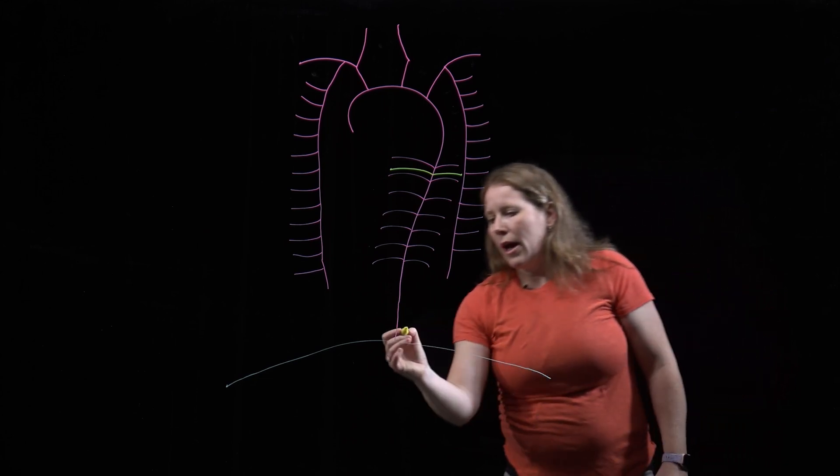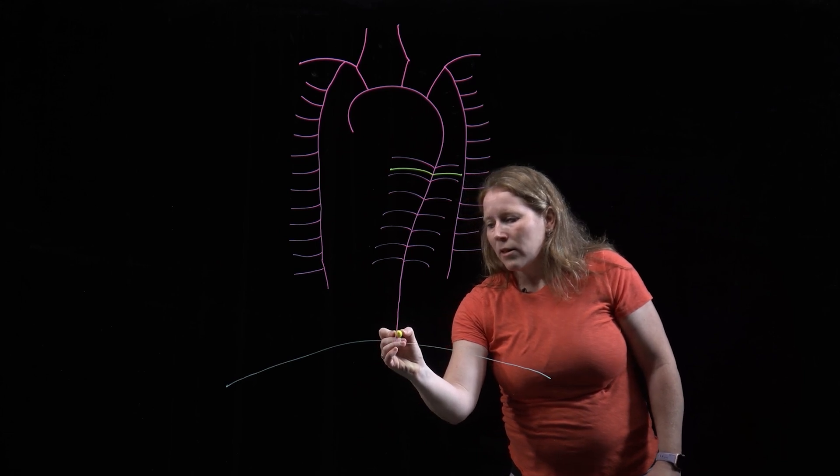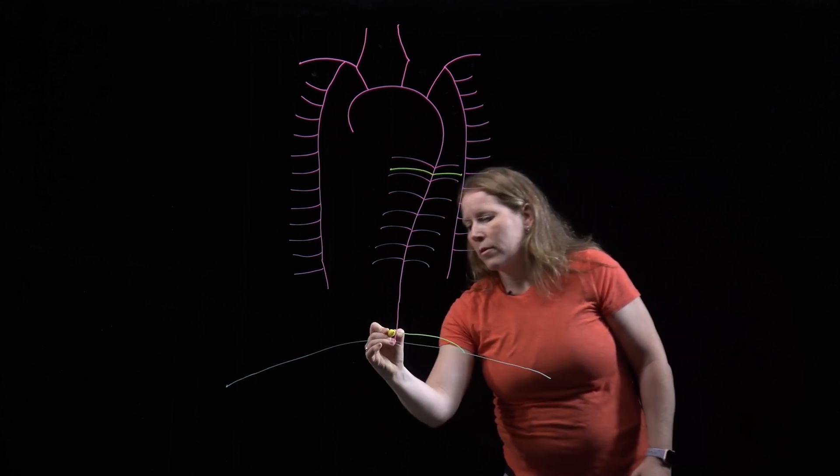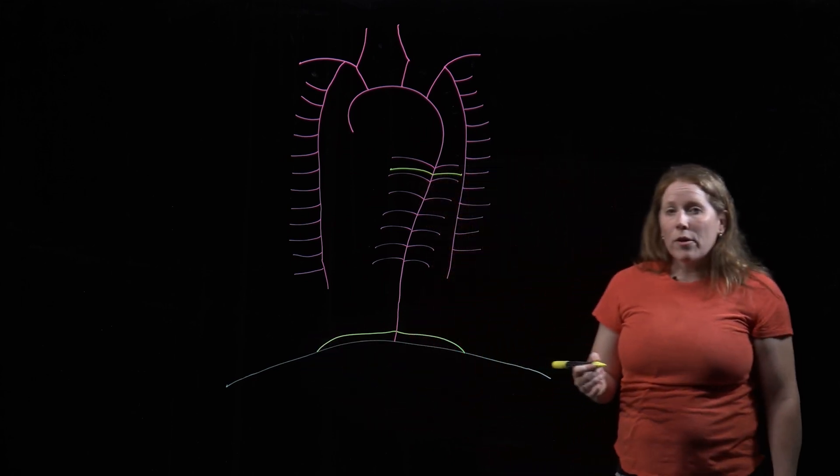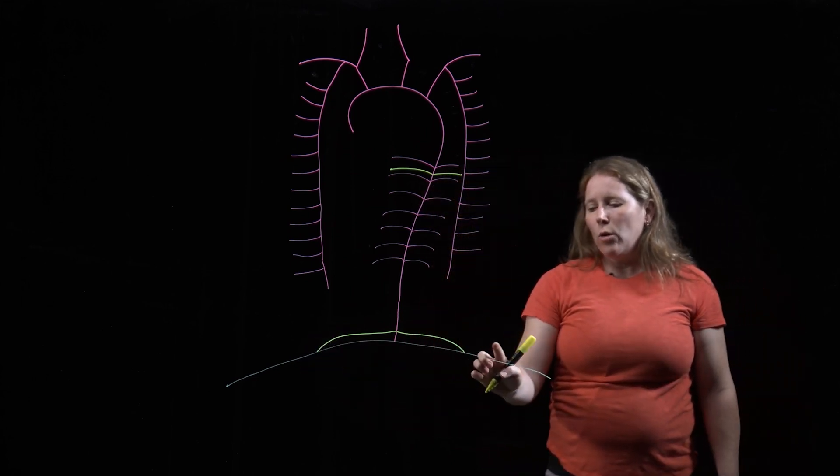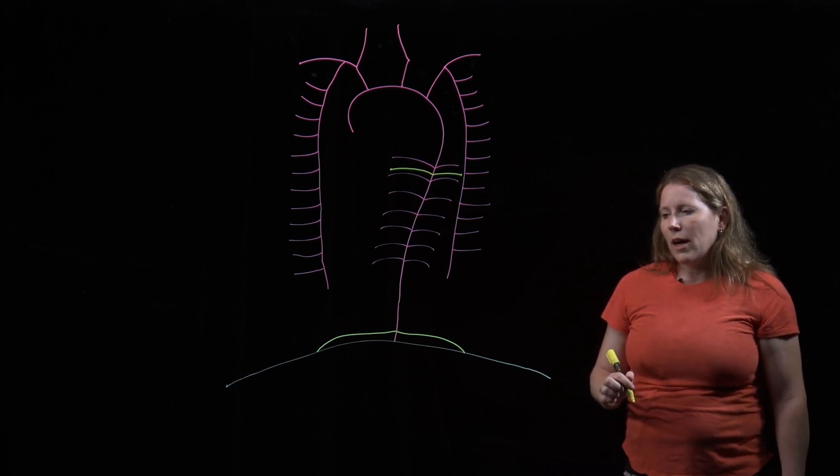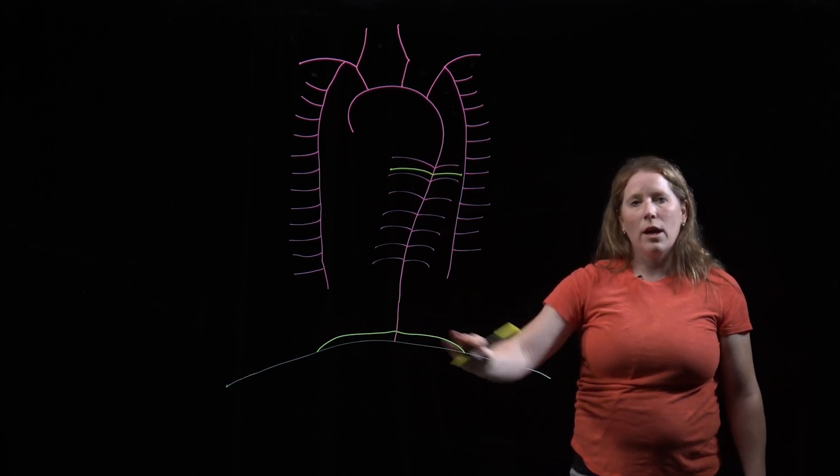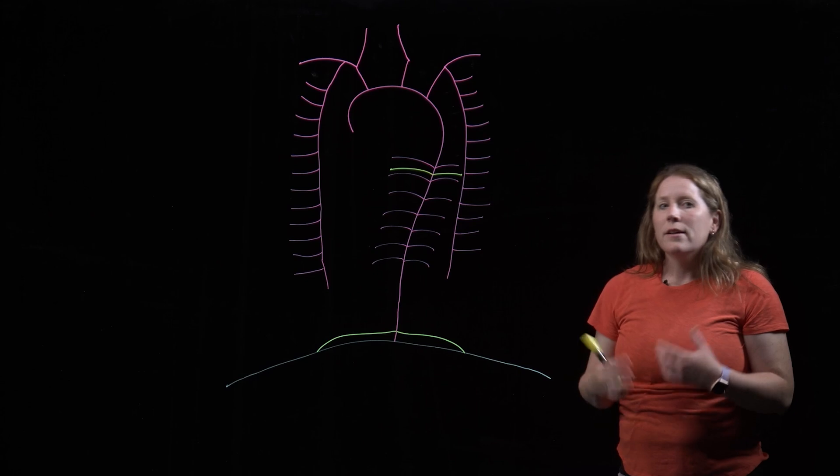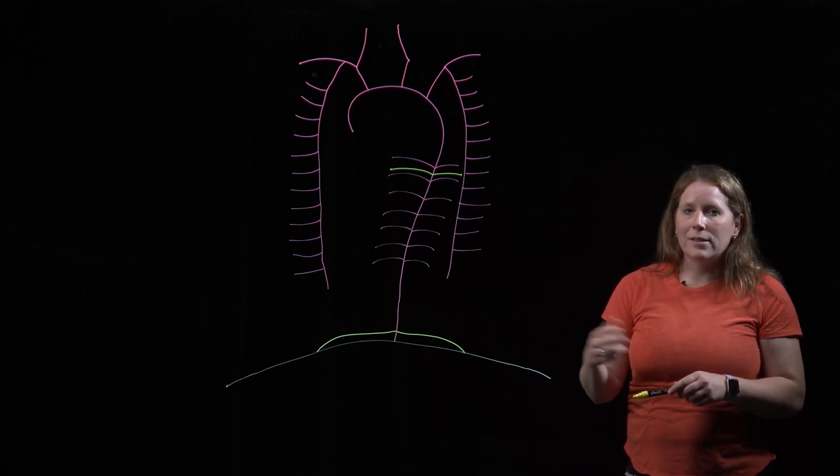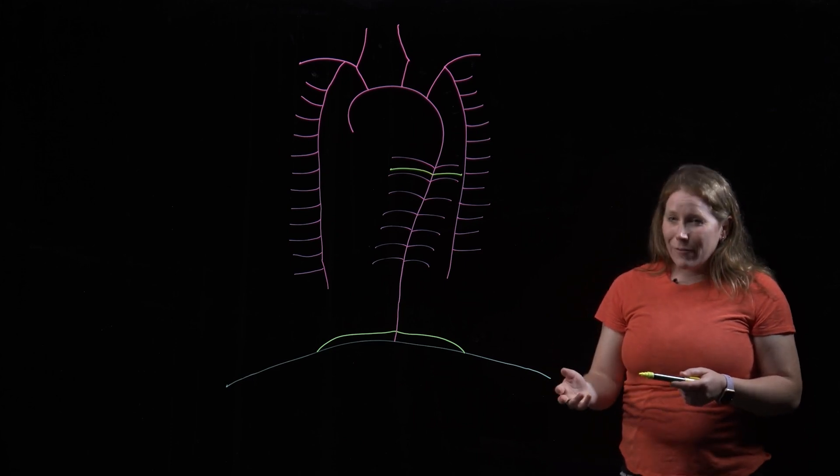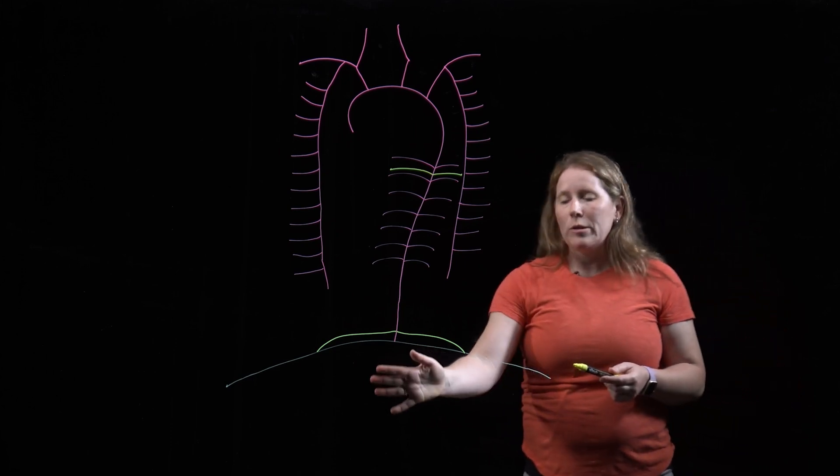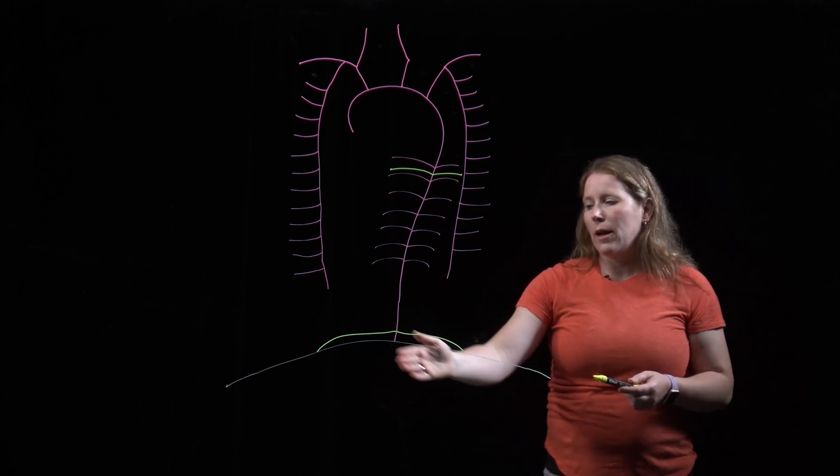We also have arteries at the very bottom here that we call superior phrenic arteries. And we know that the word phrenic is always associated with the diaphragm, so they run across and supply the top surface of the diaphragm. Again, if you're thinking ahead, if these are superior phrenic arteries, then we must also have inferior phrenic arteries. And we do, but they are branches off of the abdominal aorta. They come from underneath.